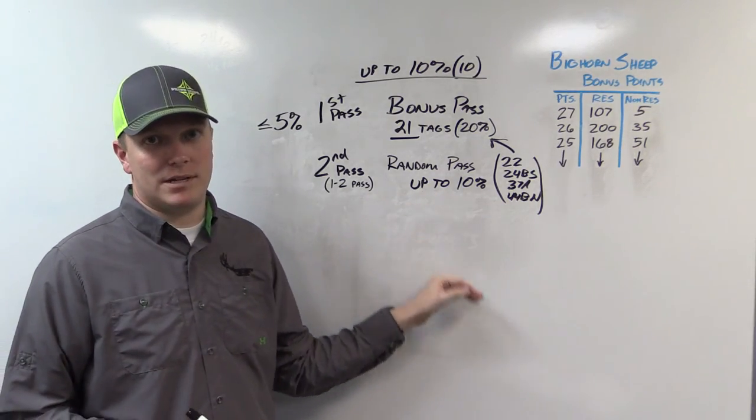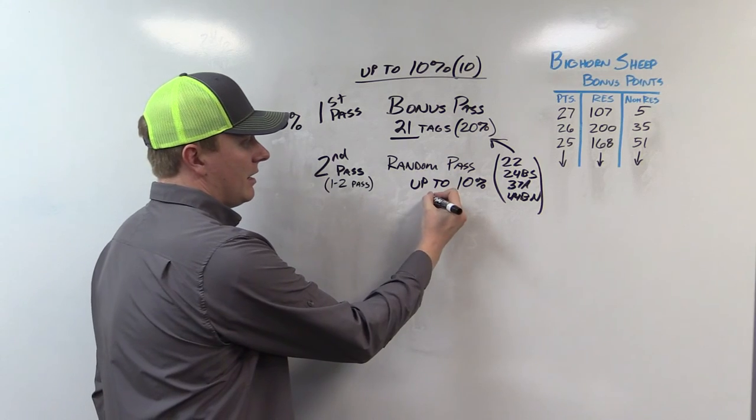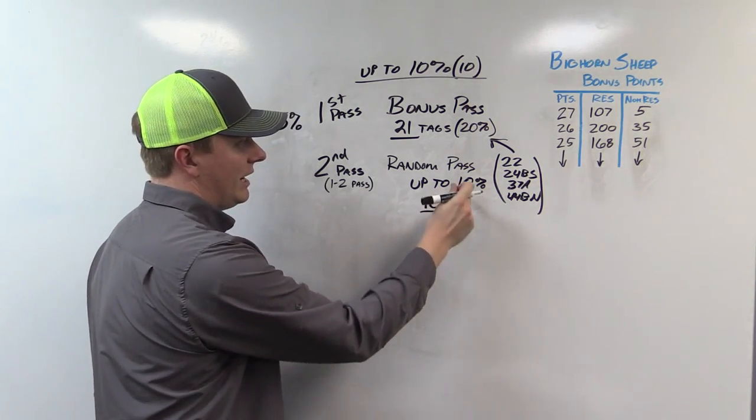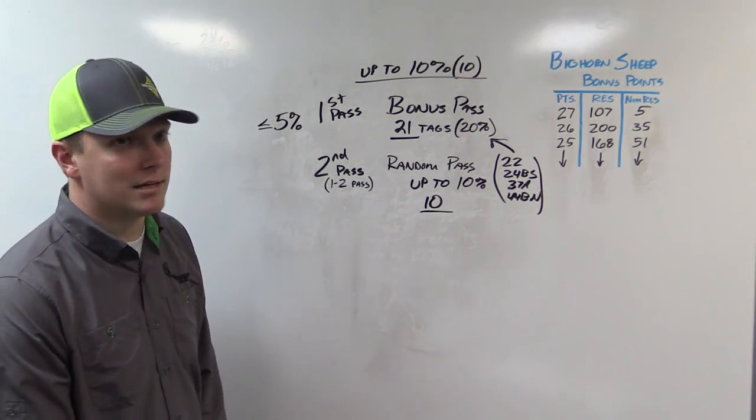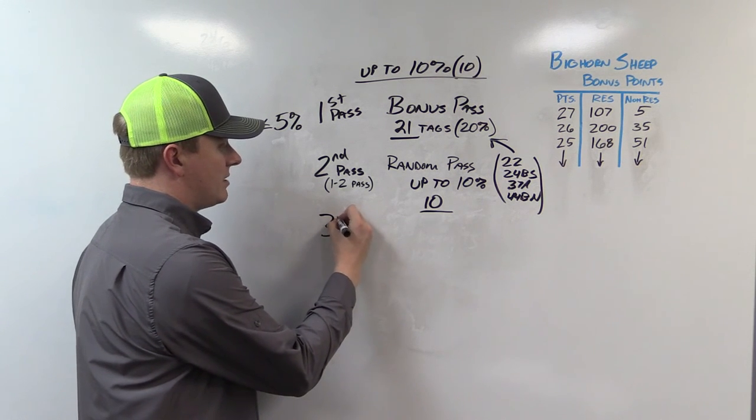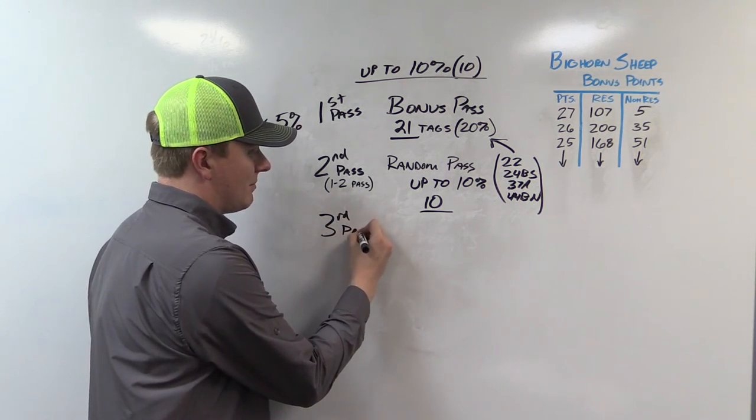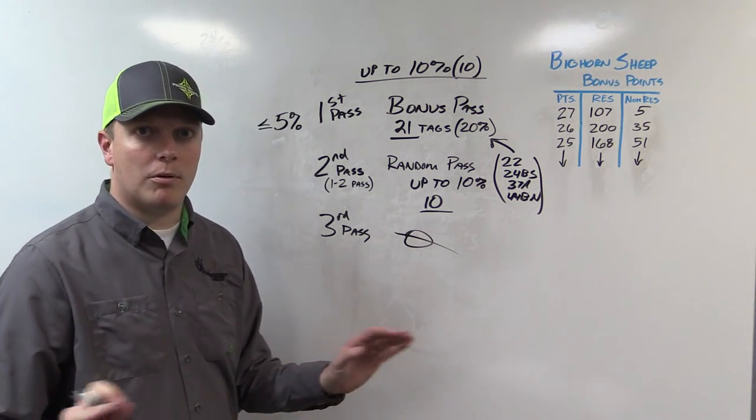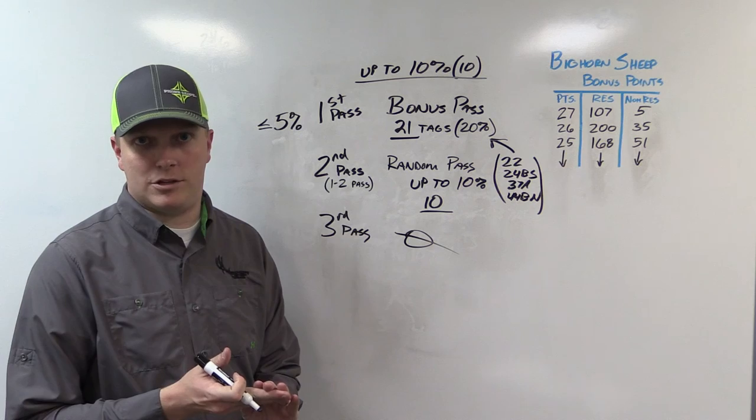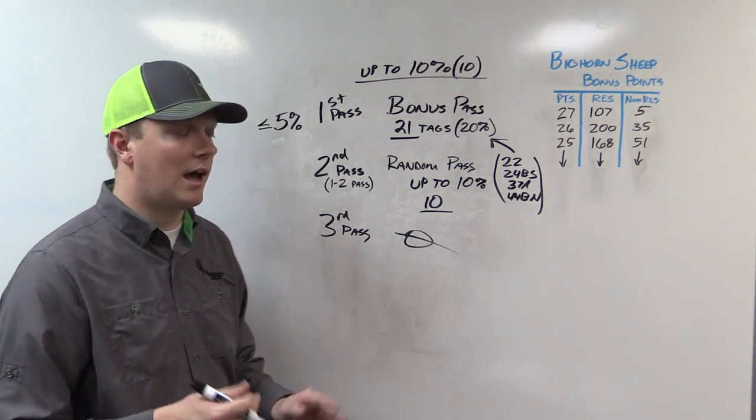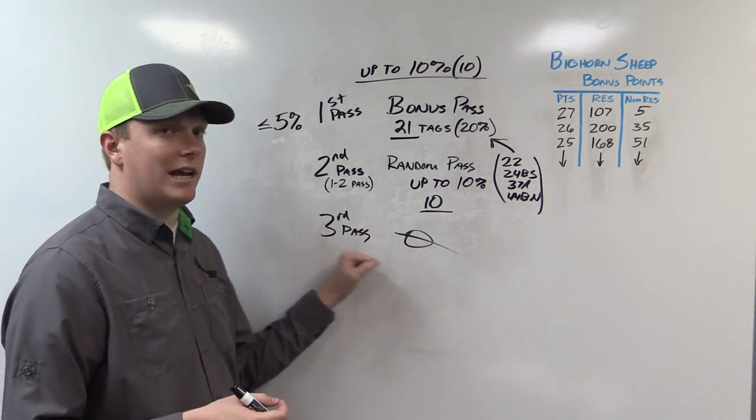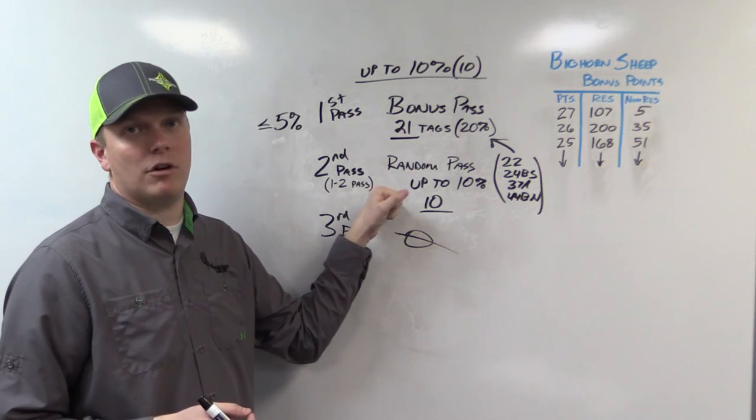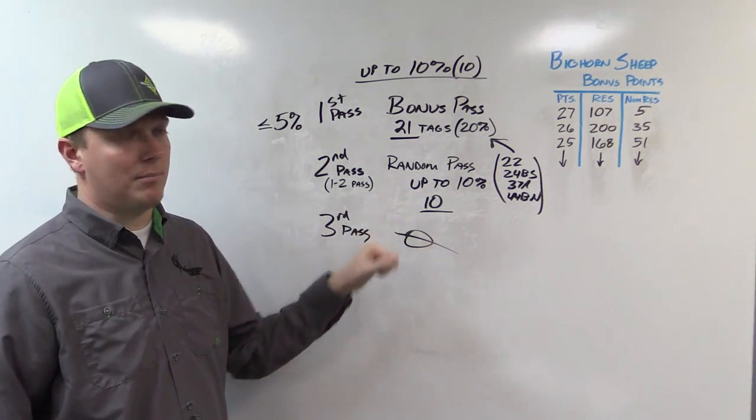So apply for some units that do have more tags that aren't taken from these maximum point holders. This is where you could draw up to 10%, so we can get our 10 tags total in this draw in the random pass. They also do a third pass. Doesn't matter on sheep because there's no leftovers. So no point in putting in your third, fourth, or fifth choice on your application. It's a waste of time. This pass only happens for tags that are left over after this draw. Not going to happen on sheep.